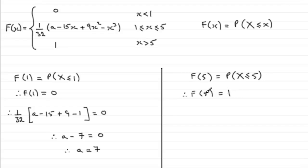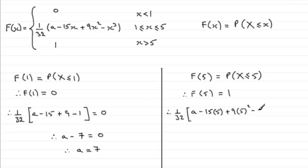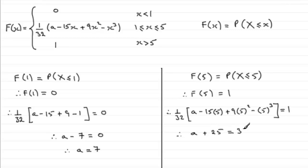We do much the same thing, substituting x=5 and equating to 1 to solve for 'a'. So we have 1 over 32 multiplied by a minus 15 times 5, plus 9 times 5 squared, minus 5 cubed, and that equals 1. Multiplying both sides by 32, the bracket equals 32, and the numerical part comes to 25. So a plus 25 equals 32, giving a equals 7.